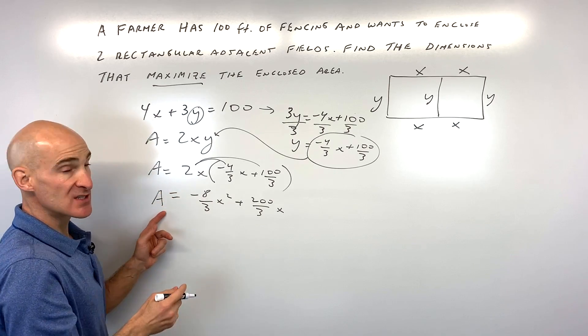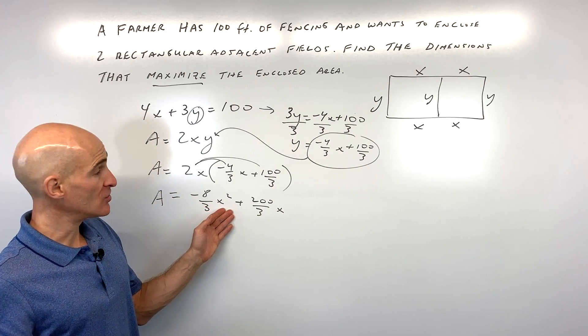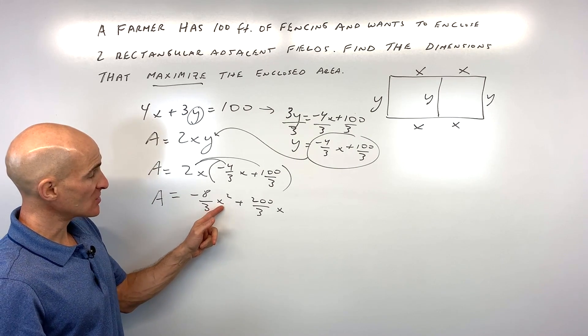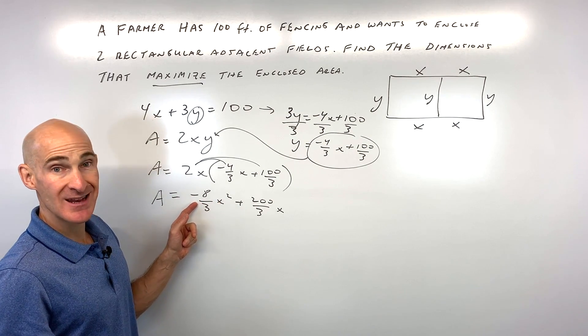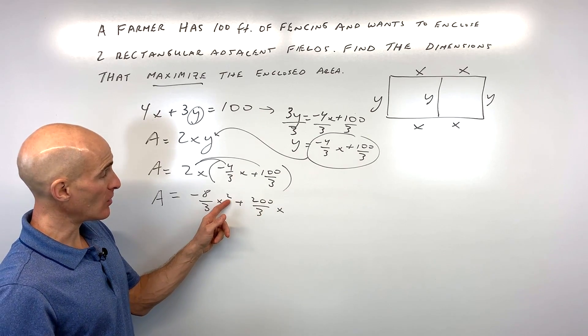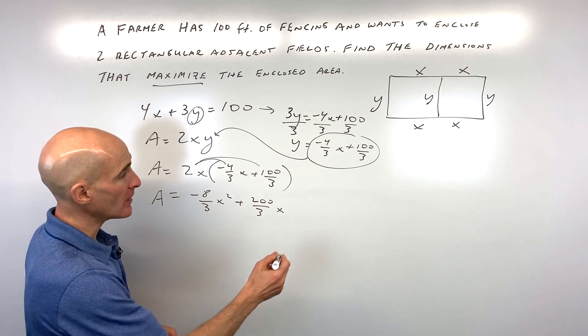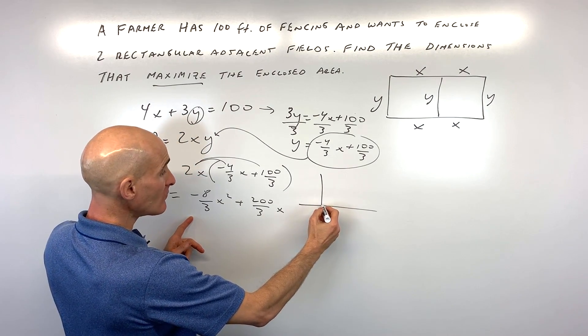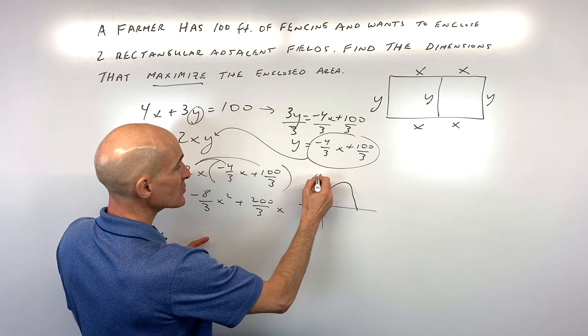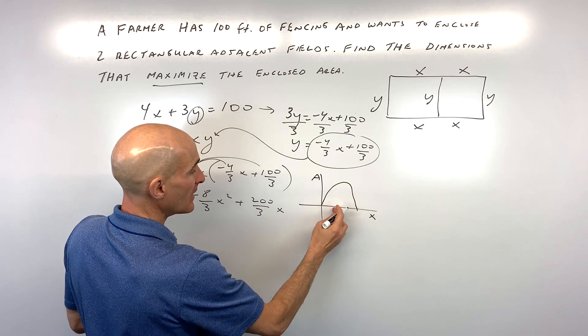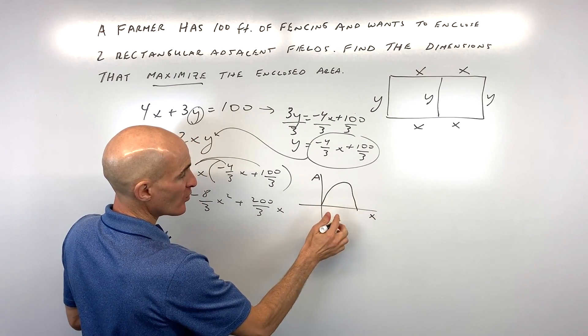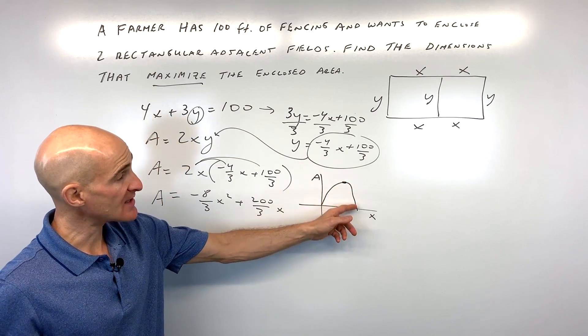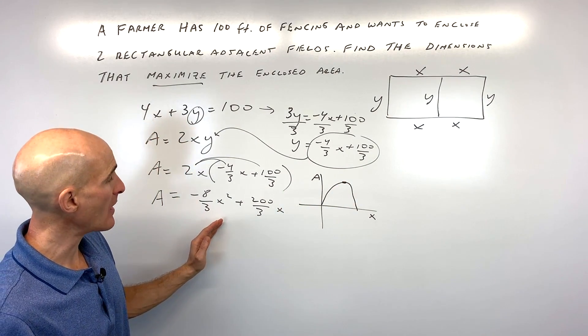Now what you can see is we have the area in terms of X. And you notice that this A value, this quantity in front of the X squared term, is negative. That tells us this is a parabola that's opening downward. So if we were to graph this, and you can do this on your graphing calculator or by hand if you want, it's going to look something like this. So here's your area in terms of X. So you can see we're looking for this point here that's going to maximize the area. Notice that's the vertex of this quadratic, the vertex of this parabola.